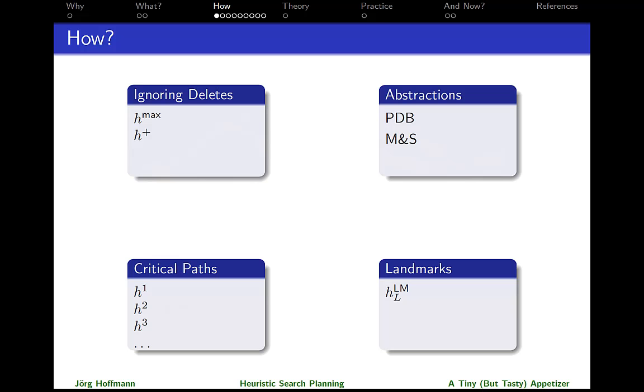Research has so far come up with four ways of doing this. So we got four different families of heuristic functions estimating goal distance in planning. In what follows, I'm going to very briefly give an intuition for each of them. And we're going to start with abstractions, and then follow clockwise.